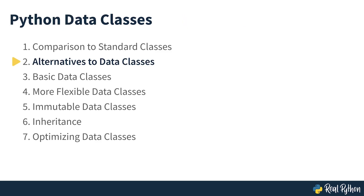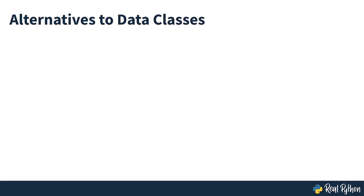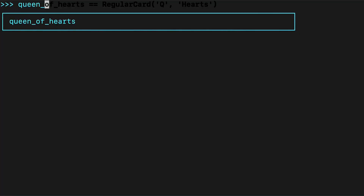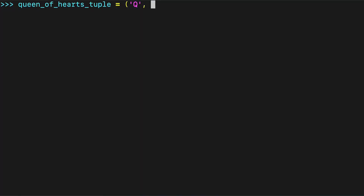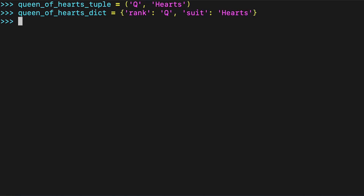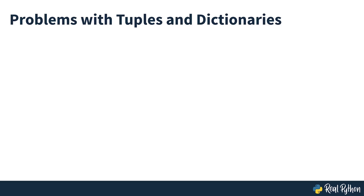Alternatives to data classes. For simple data structures, you've probably already used a tuple or a dictionary. You could represent the Queen of Hearts card in either of the following ways. This does work, but it puts a lot of responsibility on you as a programmer.